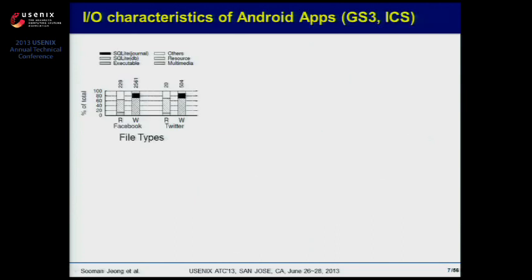We first conducted an experiment analyzing the I/O characteristics of actual Android applications, to understand how the I/O devices actually behave. The experiment used a Galaxy S3 with ICS Android version. We picked Twitter and Facebook, which are highly popular smartphone applications.